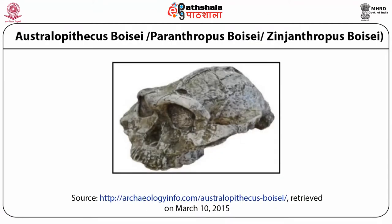Australopithecus boisei, also known as Paranthropus boisei or Zinjanthropus boisei. This is the most robust form of Australopithecus. Discovered by Mary Leakey from Olduvai Gorge, Tanzania, by Richard Leakey from Lake Turkana, Kenya, and by Suwa from Ethiopia. Australopithecus boisei existed between 1.8 and 1.1 million years ago. It was similar to robustus but the face and cheek teeth were even more massive, some cheek teeth up to 2 cm across. The brain size is very similar to robustus, about 530 cc. Some scholars consider boisei and robustus to be variants of the same species.